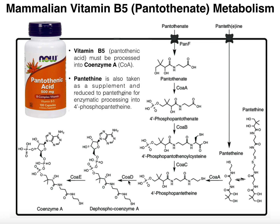This next enzyme, CoaD, is an enzyme called 4'-phosphopantothenoyl adenylyltransferase. What this enzyme does is transfer the AMP moiety from an ATP molecule onto the phosphate of 4'-phosphopantothenoyl. So notice here's that phosphate, we have another phosphate, the ribose ring, and adenine. This whole region over here is adenosine monophosphate, so now we have a diphosphate linkage between this chain and this adenosine.